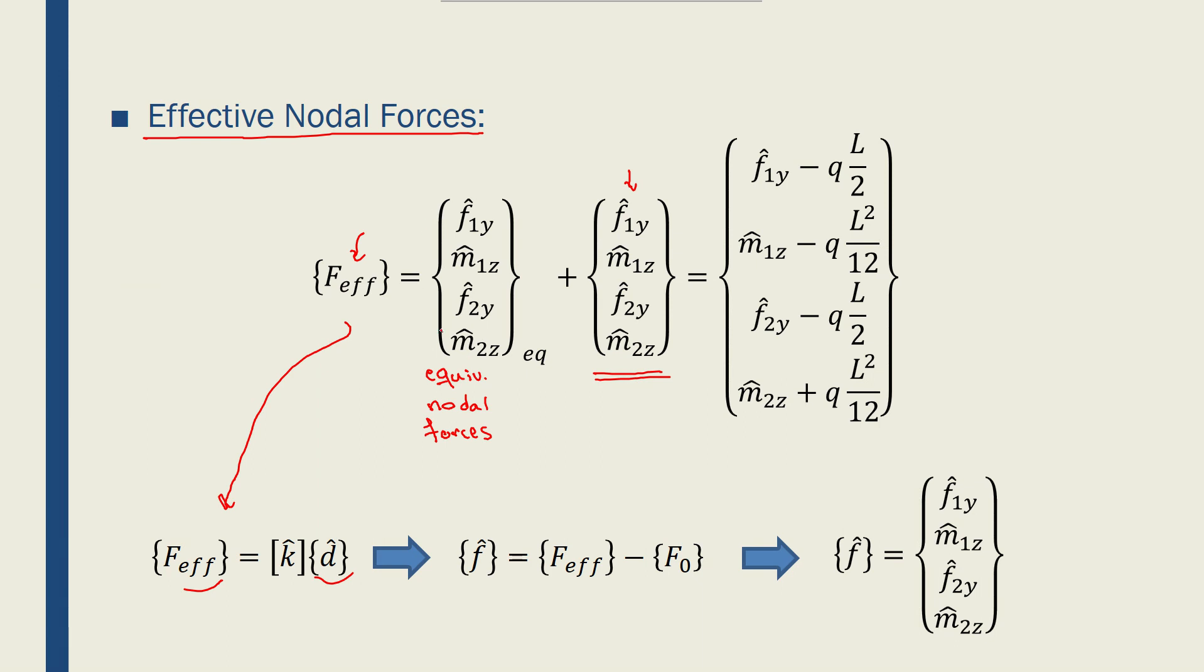We have the equivalent nodal forces from before. These are our unknowns and some of them might be known. We add the two vectors and we come up with this vector.